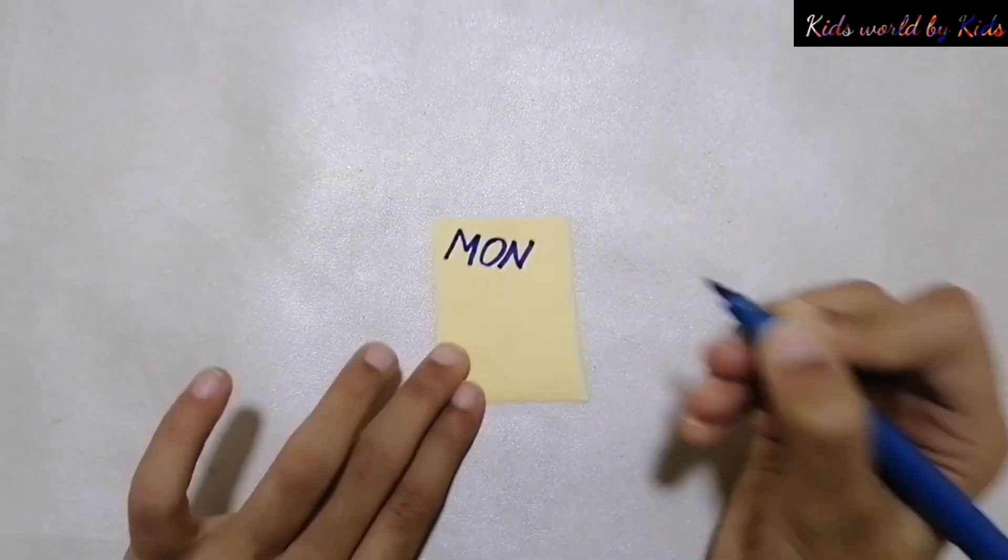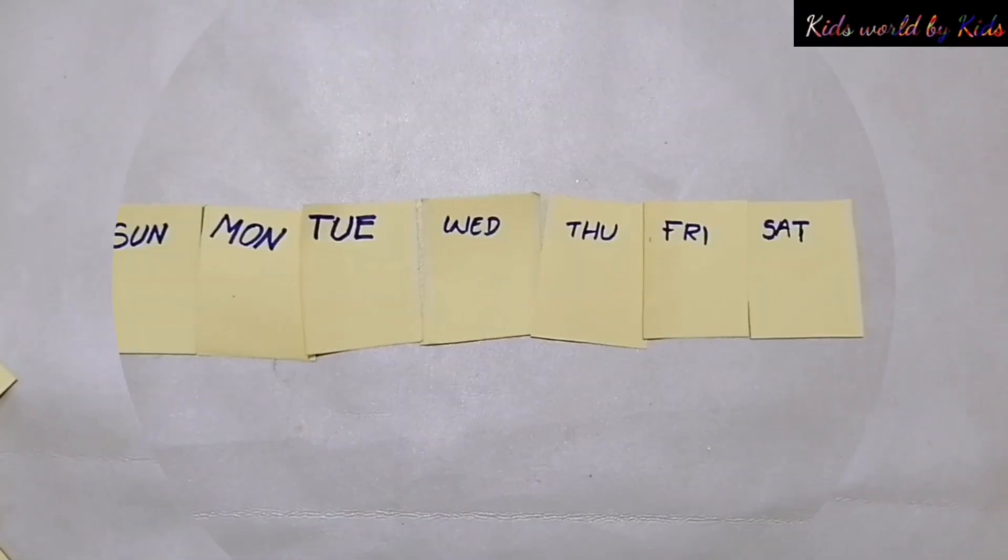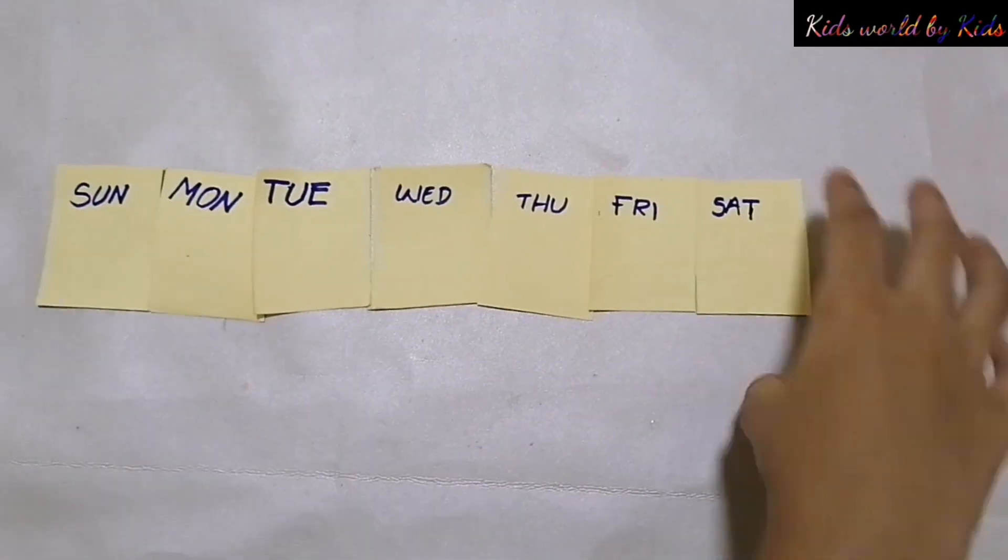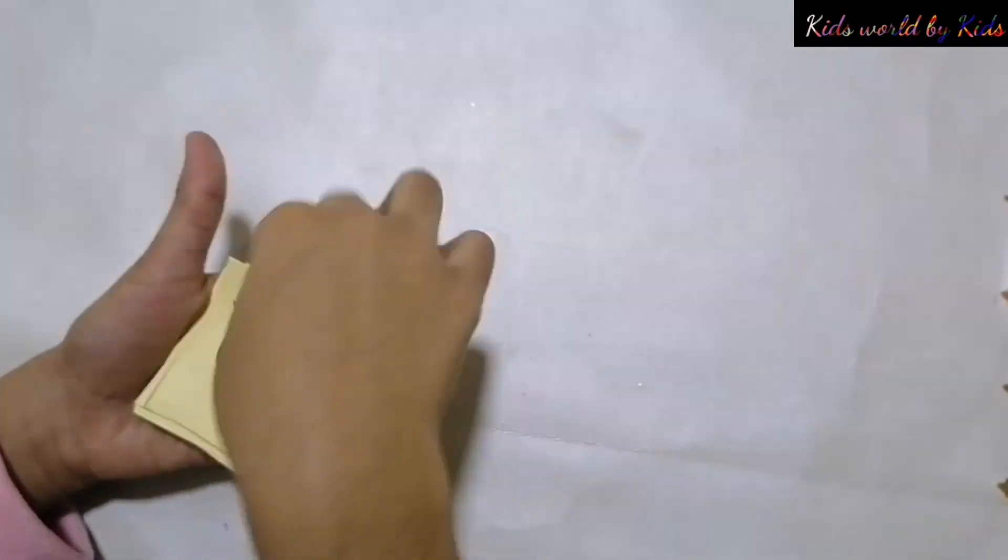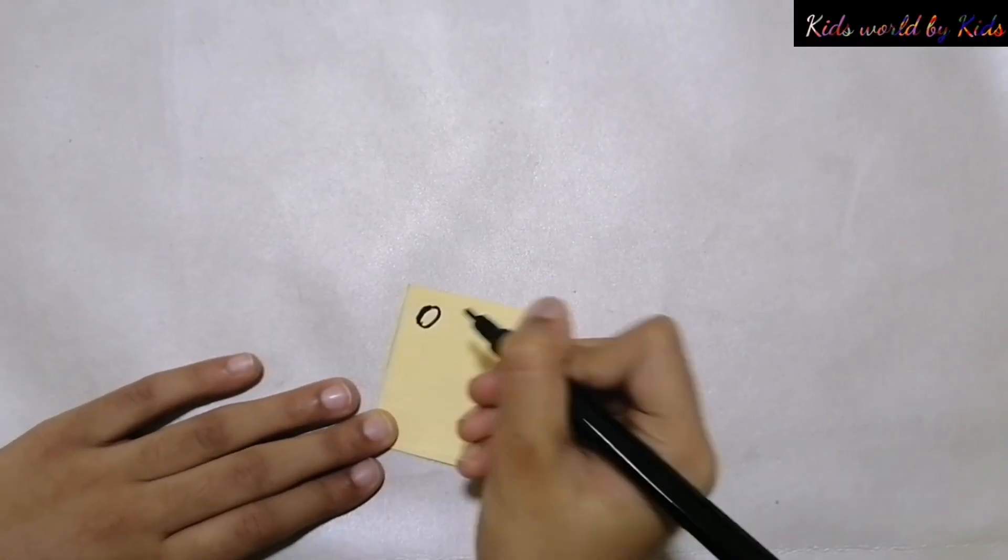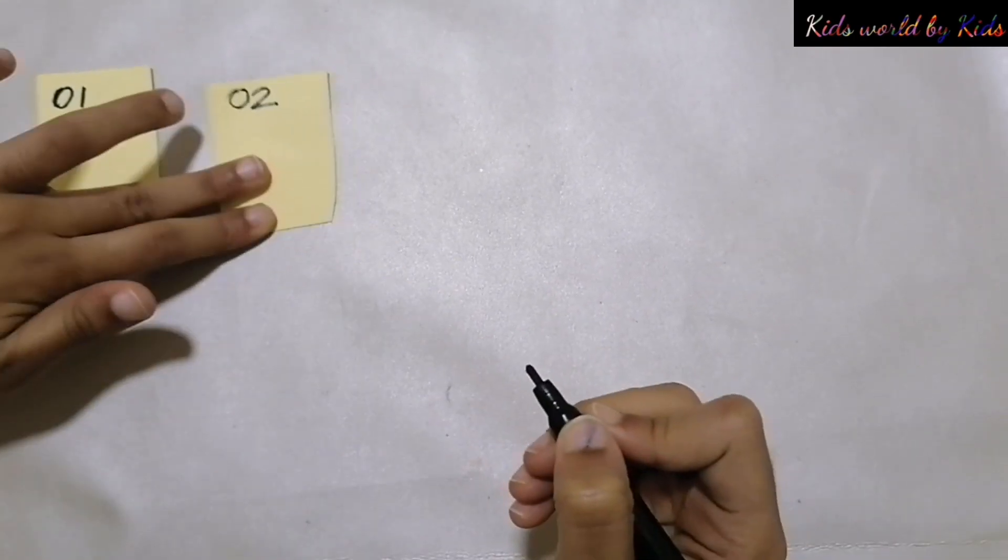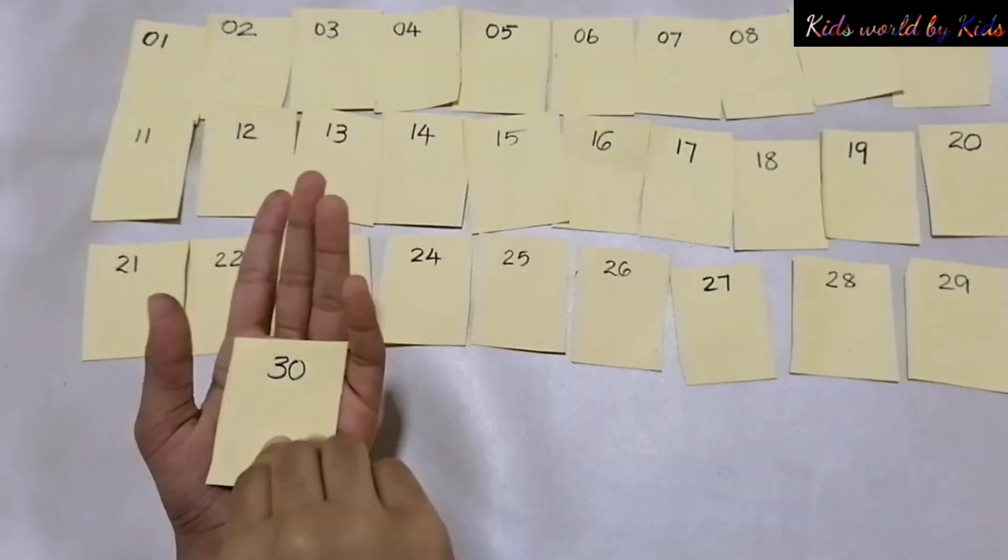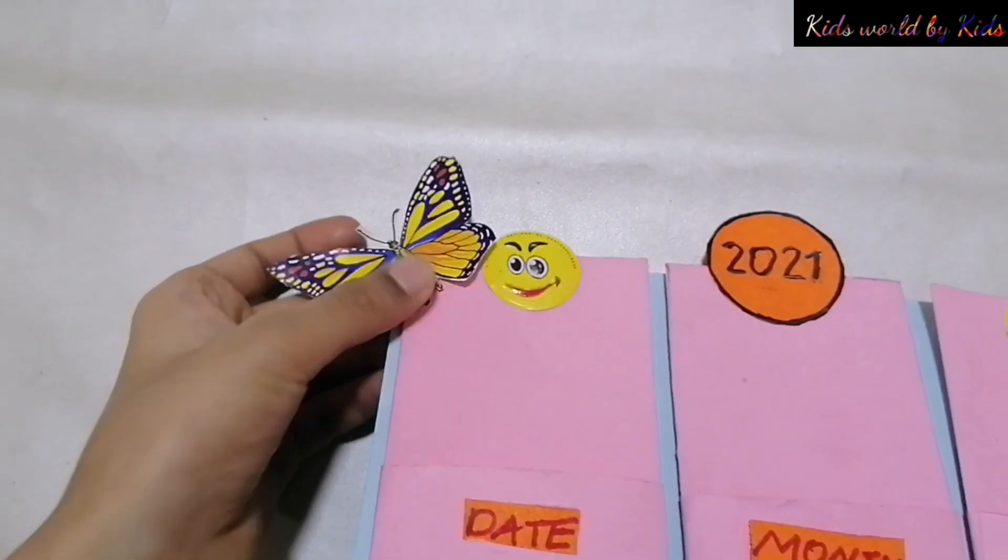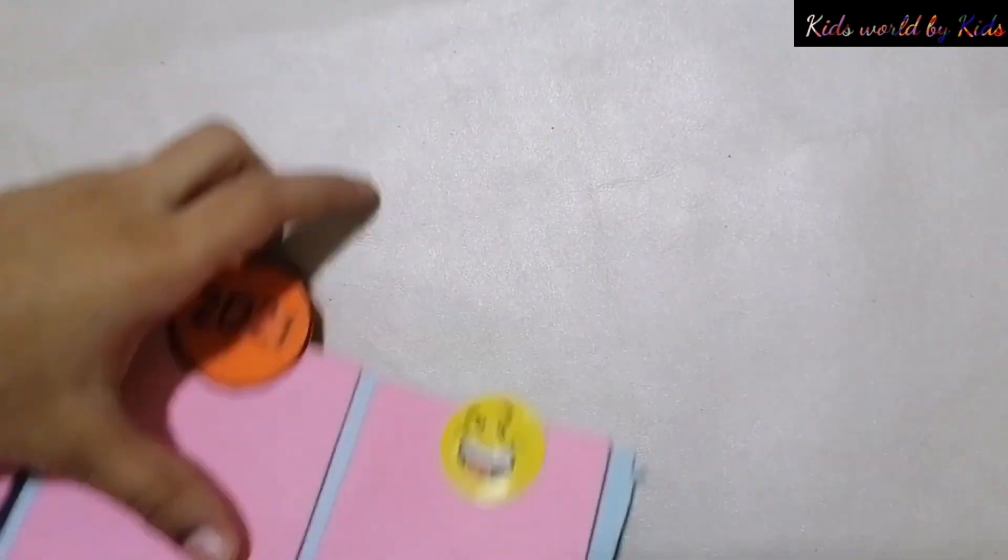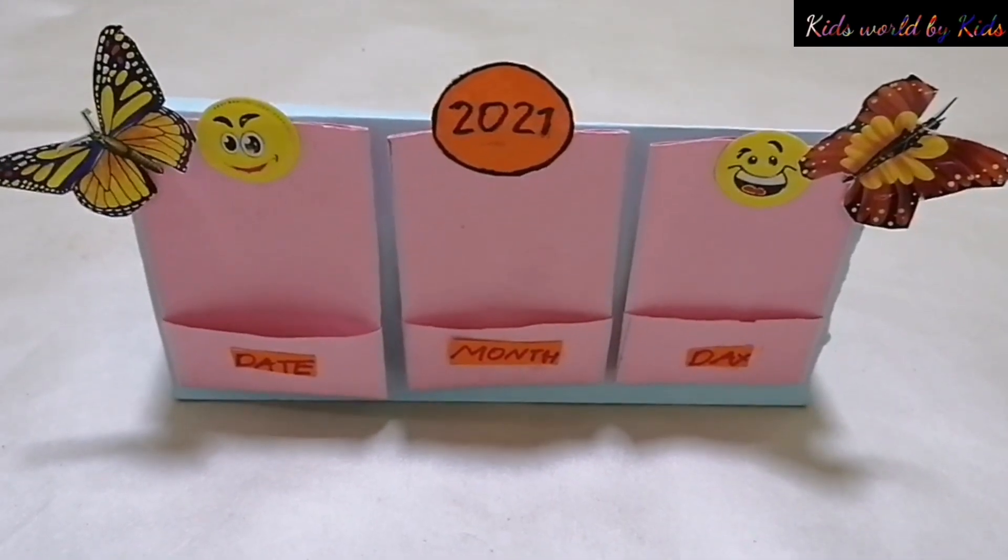Write 7 days: Sunday, Monday, Tuesday, Wednesday, Thursday, Friday, Saturday.